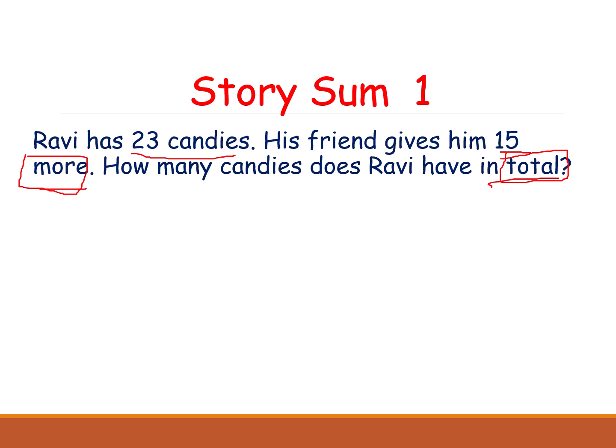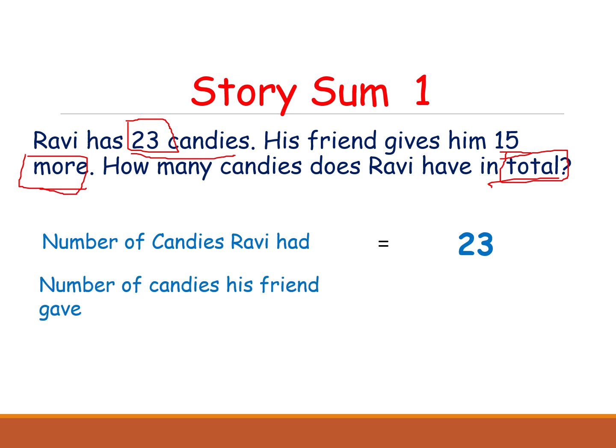Now let's see how to solve it. Number of candies Ravi had — how many? 23. His friend gives him 15. Number of candies his friend gave to him — how many? 15.